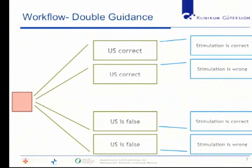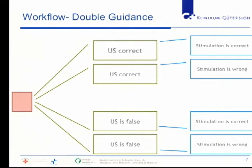Several scenarios can occur: you may have a correct ultrasound picture and correct stimulation endpoint, or a correct ultrasound picture with wrong stimulation — which can be false positive or false negative. Conversely, the ultrasound picture can be false while stimulation is correct, meaning needle placement is wrong. Finally, both ultrasound and stimulation can be wrong simultaneously — which is 200% bad.